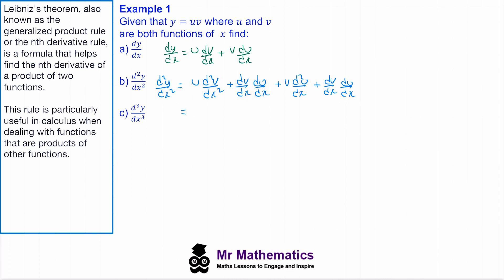So our second derivative we can write as u·(d²v/dx²) plus two lots of (dv/dx)·(du/dx) plus v·(d²u/dx²). So this is our simplified second derivative.